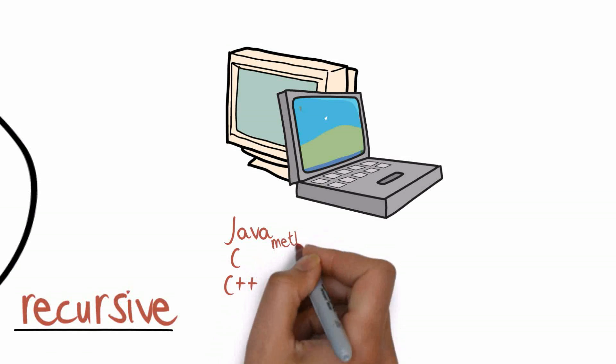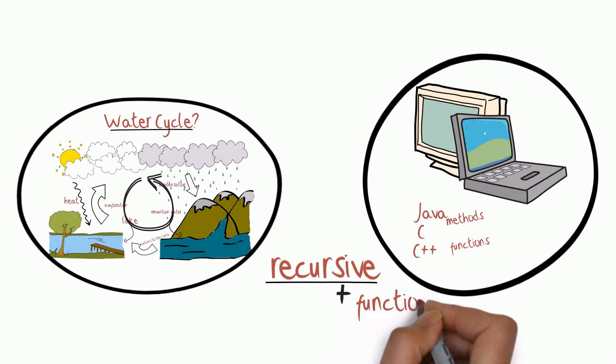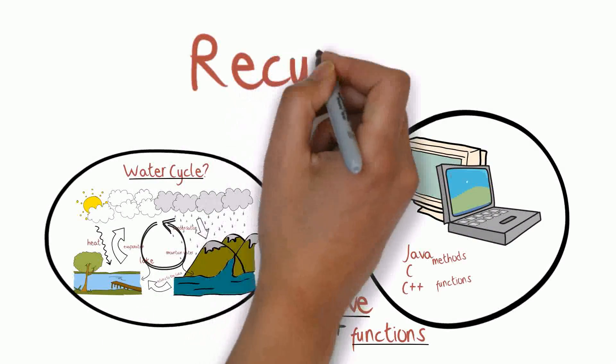Now such methods and functions in computing which call itself over and over again is called to be recursive functions. And the process is known as recursion.